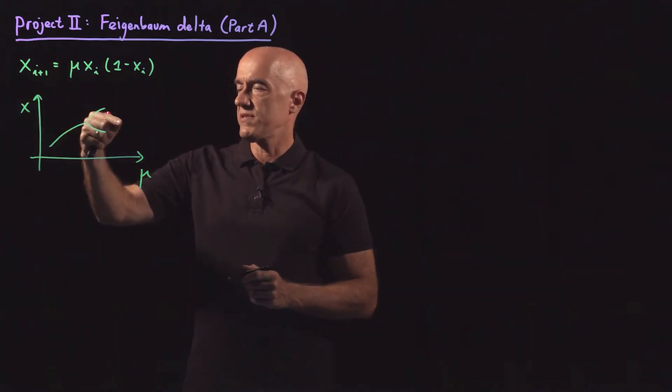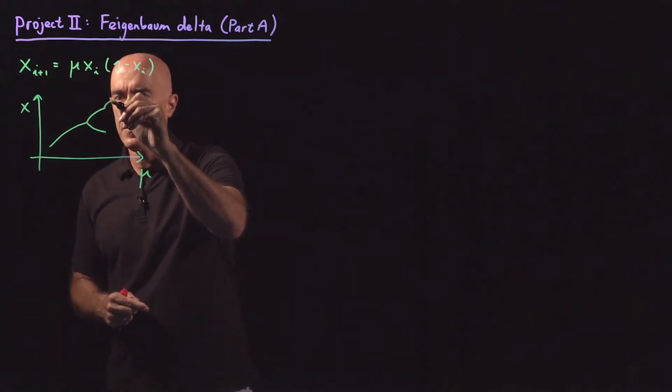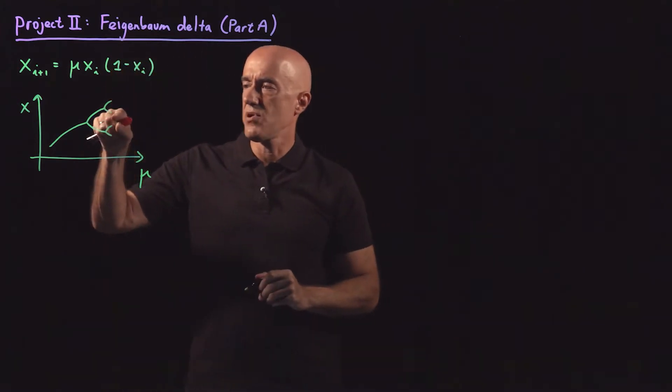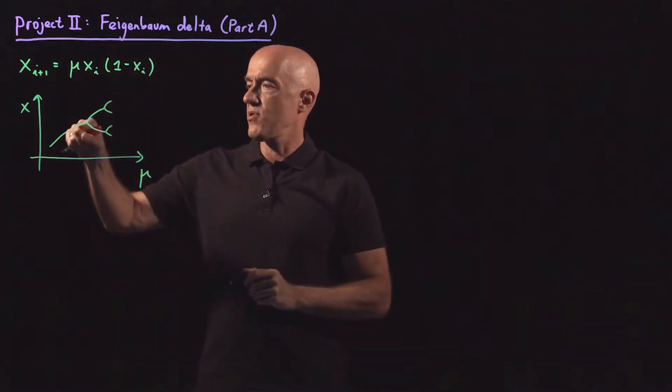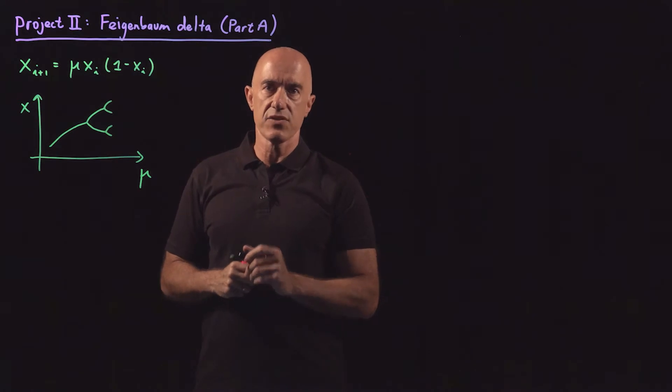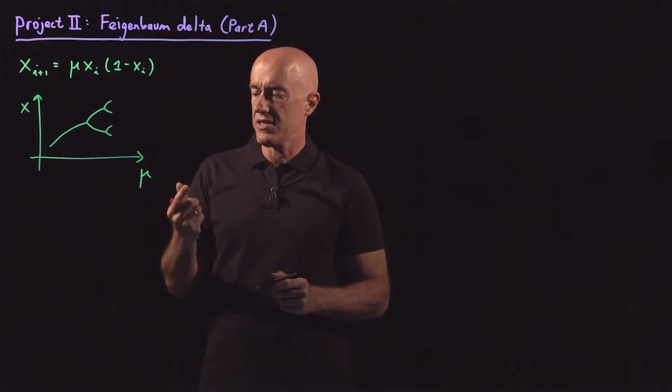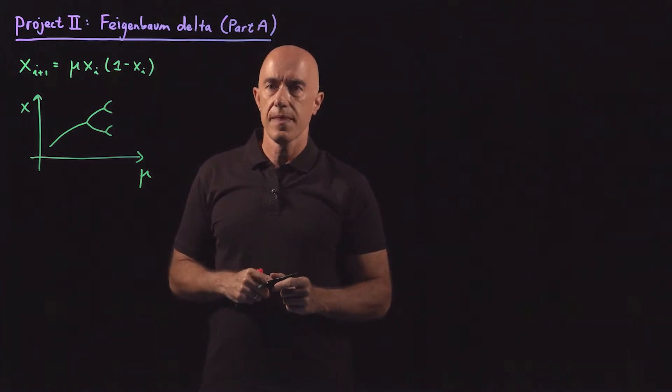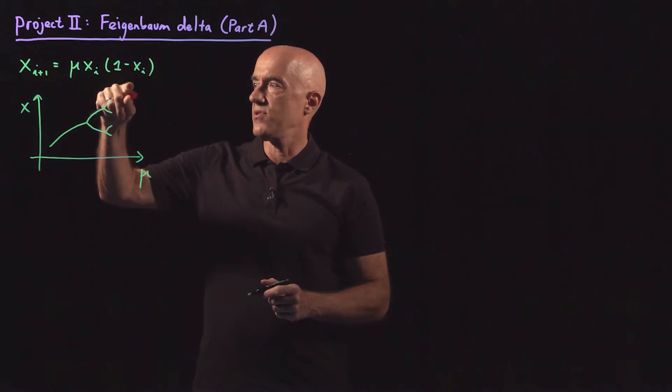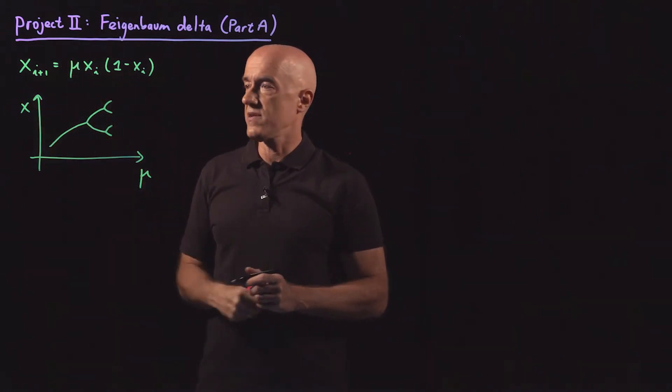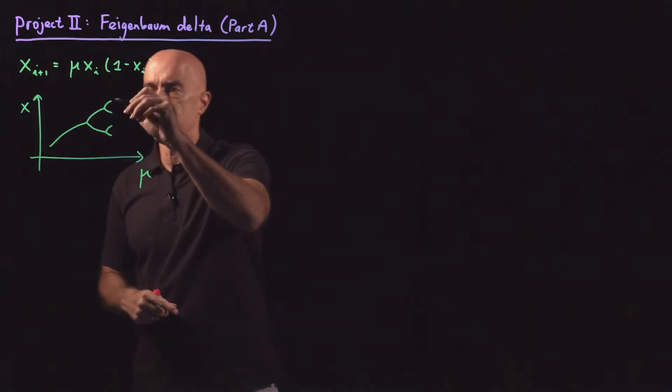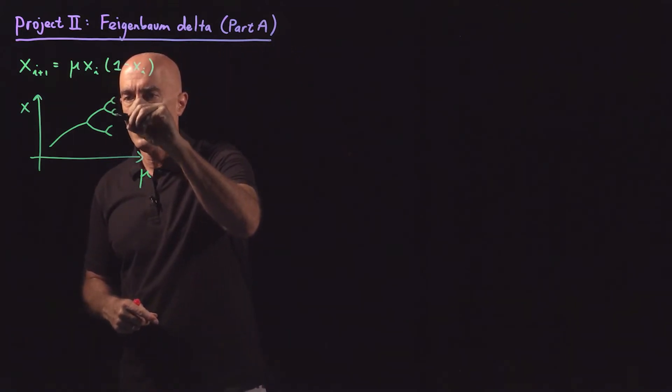Then as mu increased further, you got another bifurcation which looked like this. And that's called a period 4 cycle. So a period 1 cycle is the fixed point. A period 2 cycle are two values, x naught and x1. A period 4 cycle are four values, x naught, x1, x2, x3. And then when you plug in x3, you get x naught again. So that's a period 4 cycle. And then another bifurcation point, which looks something like this. And that would be a period 8 cycle.